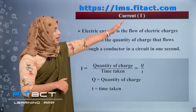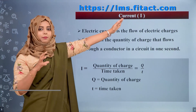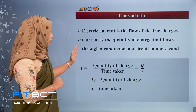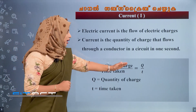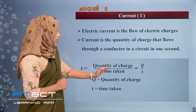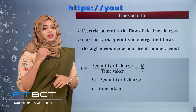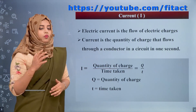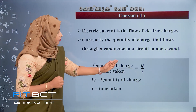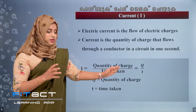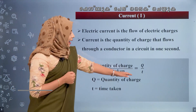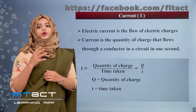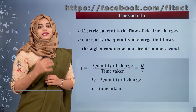100 divided by 10 equals 10 Ampere. Current is denoted by the letter capital I. The formula is: I equal to quantity of charge divided by time taken. That is, I equal to Q by T, where Q is the quantity of charge flowing through the conductor and T is the time taken to flow Q amount of charge.